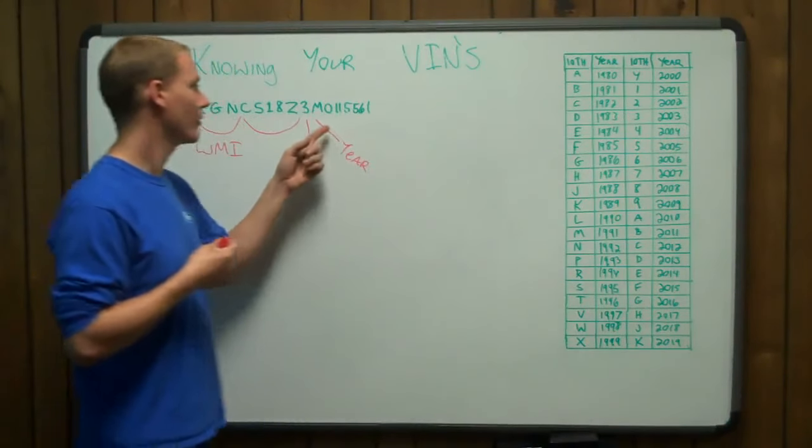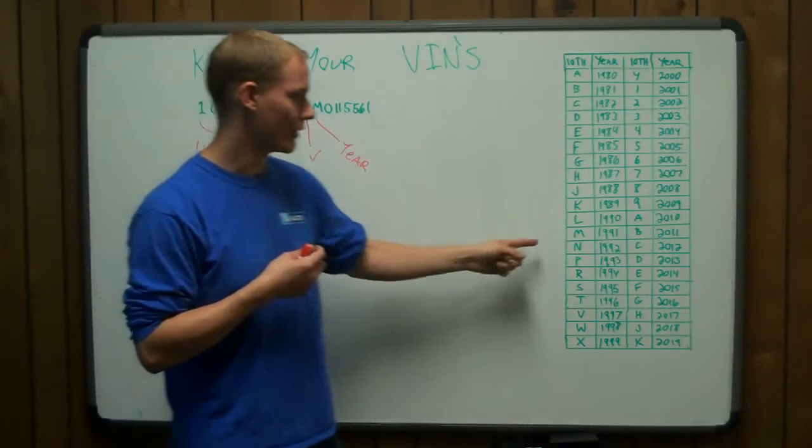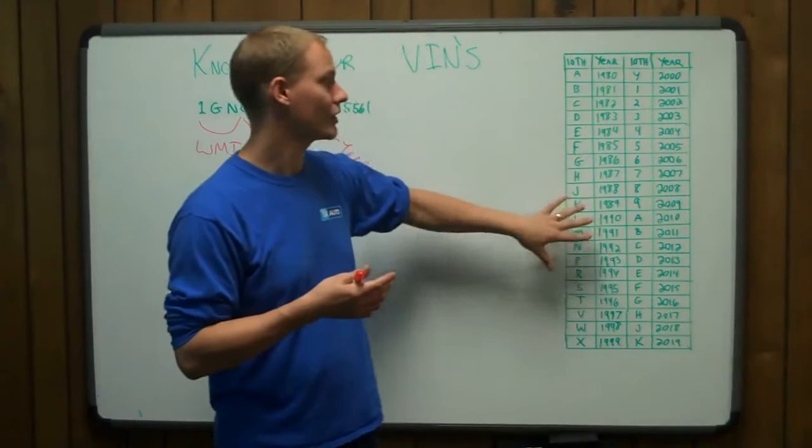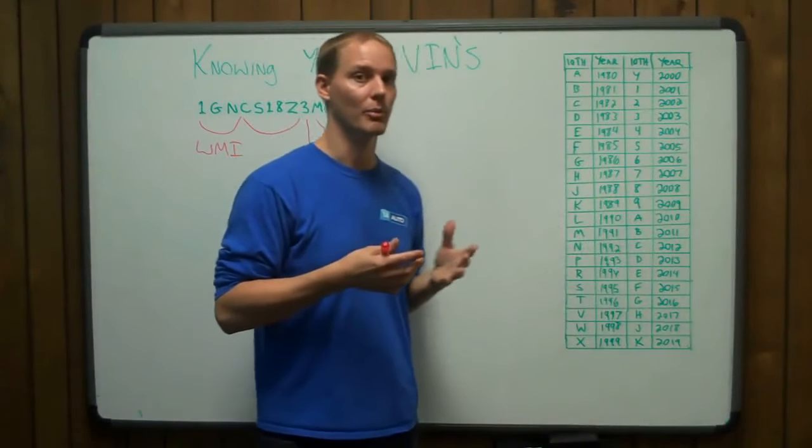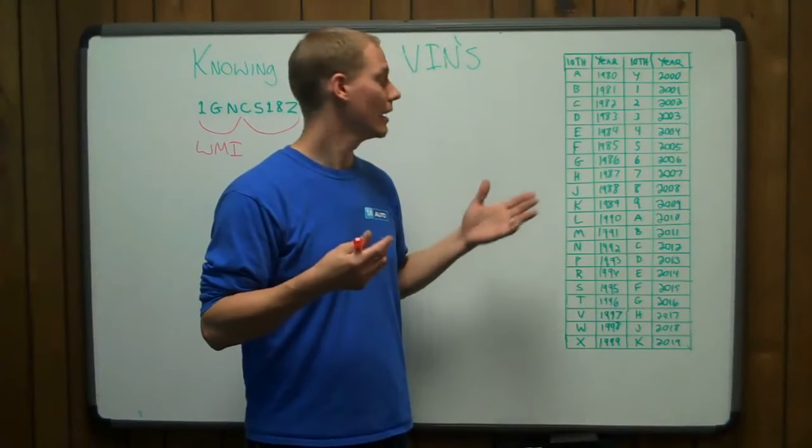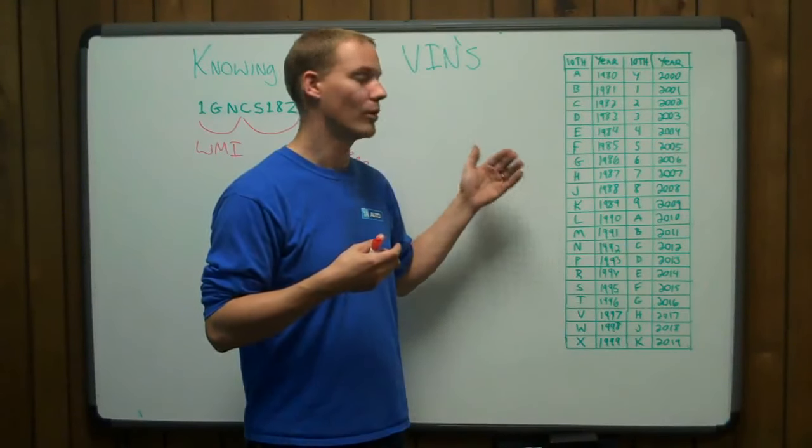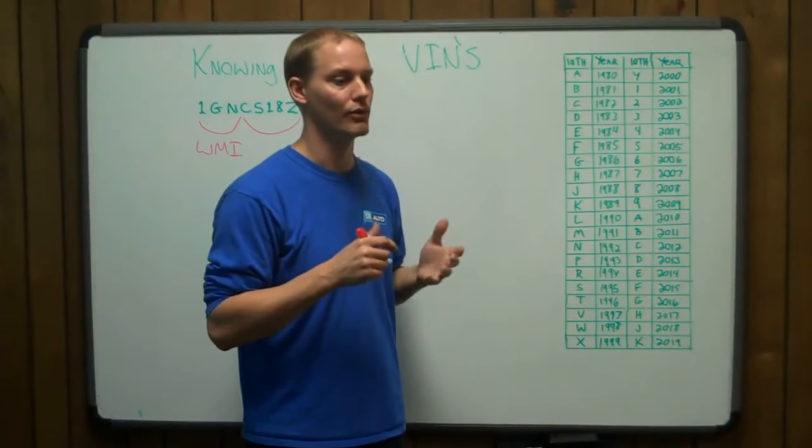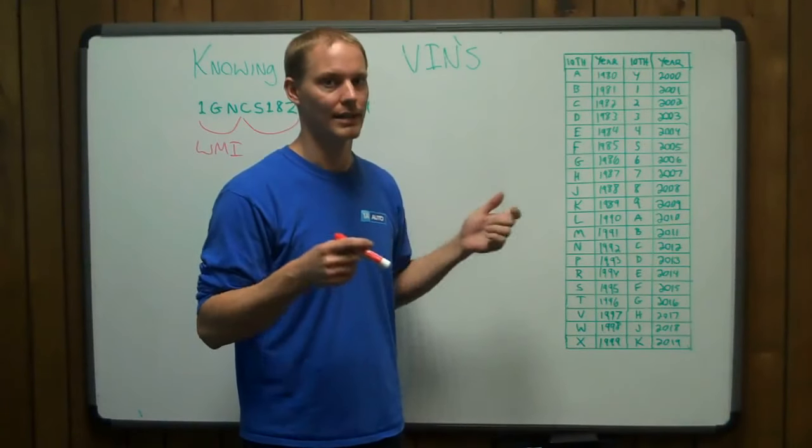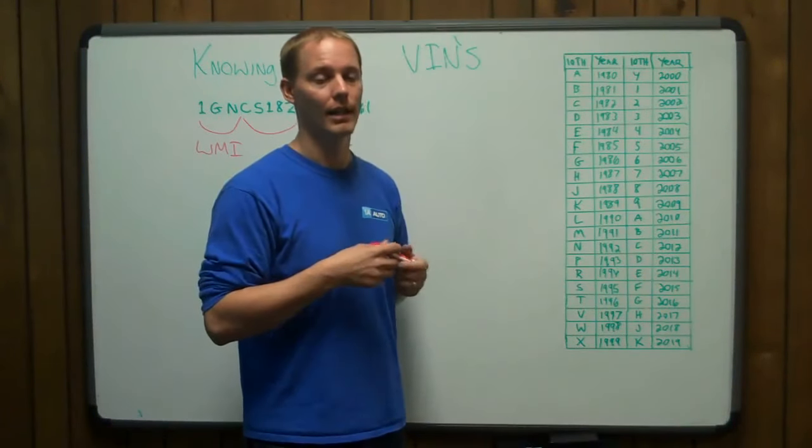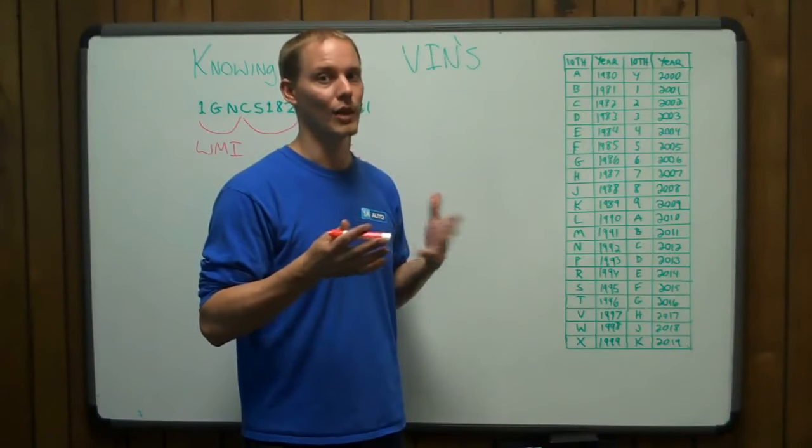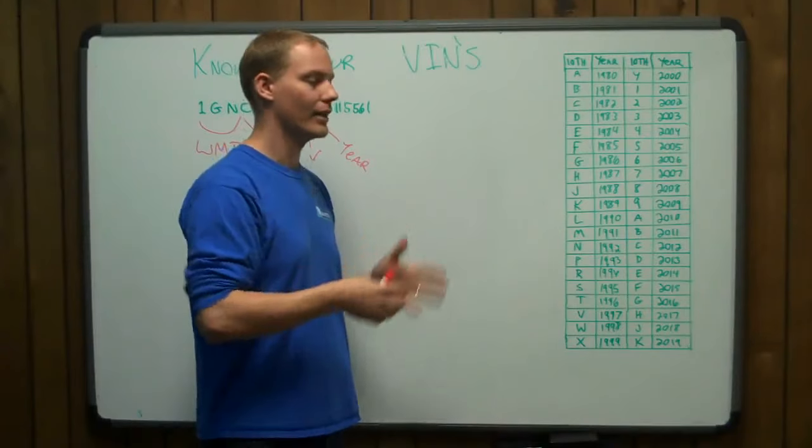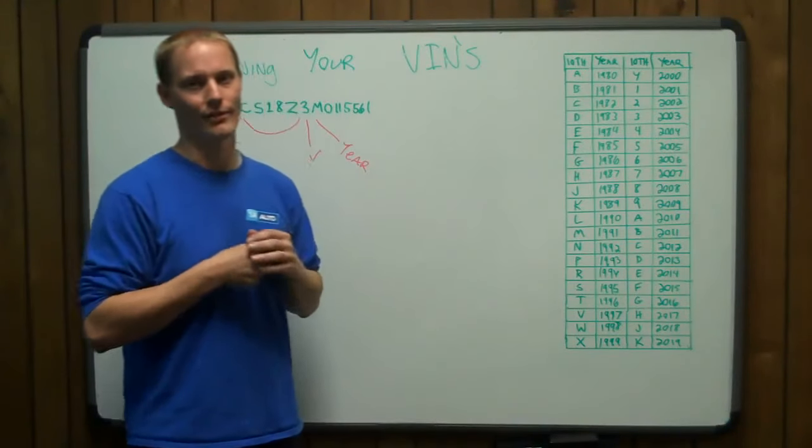So in this case, for a tenth digit, we have M. So you come over to the chart. M is a 1991. It's always a 1991. So if you have this chart, which I'll make sure you can print out on this page, you can always know what year a vehicle is. It's great in the junkyard because you can walk up to a VIN, say, oh, this is a 1988, it's a VIN J. And you know you have the right or the wrong part. So really, really helpful. You can print it out, throw it in your wallet, show off to your friends.